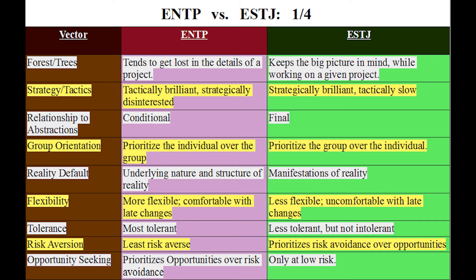One of my ESTJ friends is quite a good guitarist, and he's got a couple of distinct things he does well. Relationship to abstractions: ENTPs are conditional, ESTJs are final — they like to settle on a final model and have a clear understanding of how things ought to be. That's a big difference between ENTP and ESTJ, and it's what makes us a bad match for a romantic relationship.